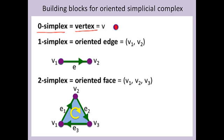We have oriented edges. Since they are one-dimensional, we call them one-simplices. When using Z mod 2 coefficients, we can ignore orientation, but with any other type of coefficients such as integers, our simplices will be oriented.